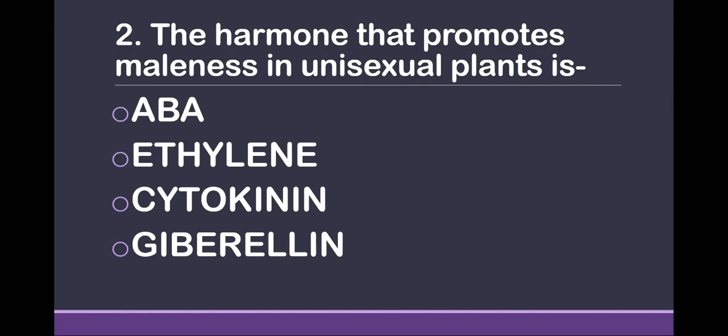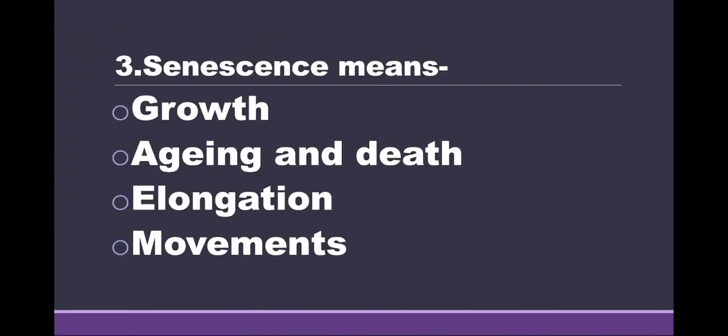Question 2: The hormone that promotes maleness in unisexual plants. Options are: ABA or abscisic acid, ethylene, cytokinin, and gibberellin. The answer is gibberellin.